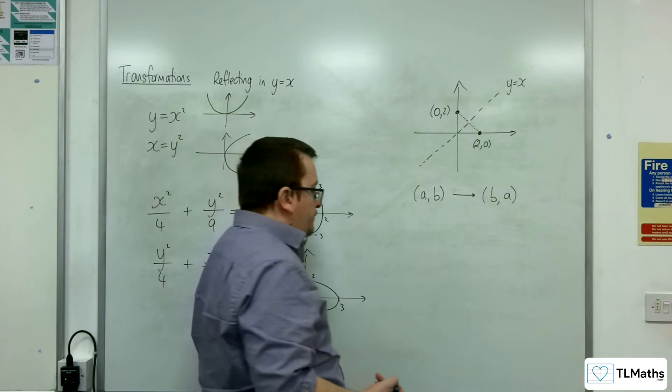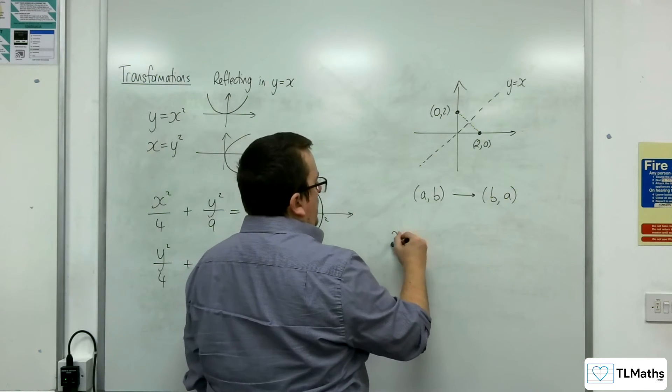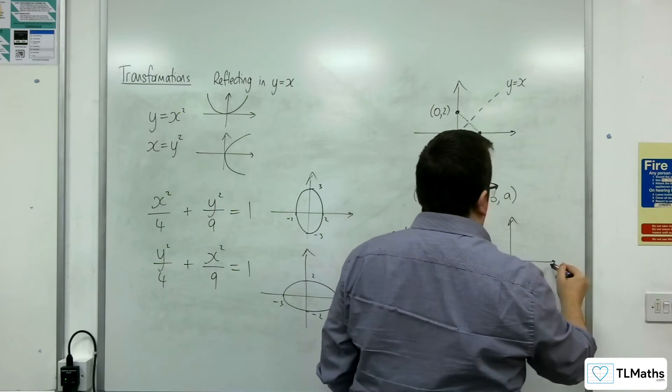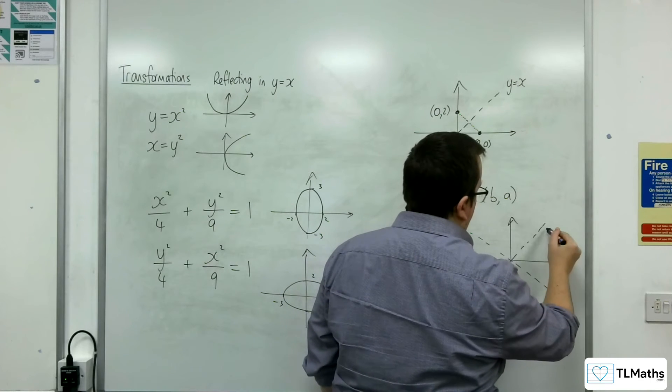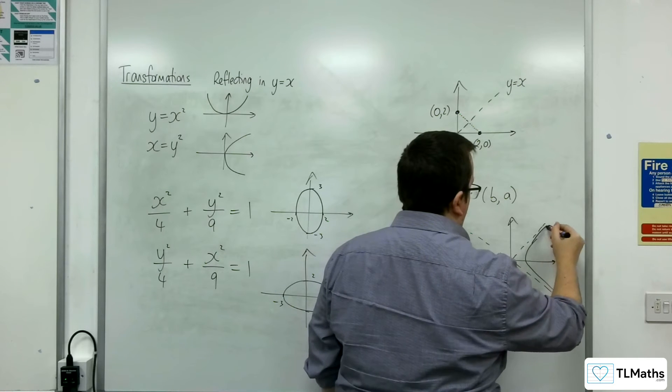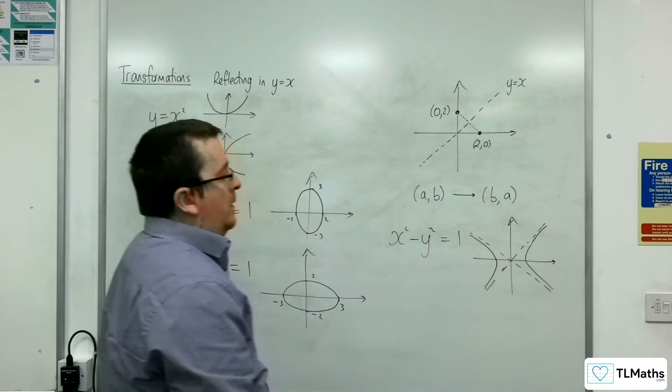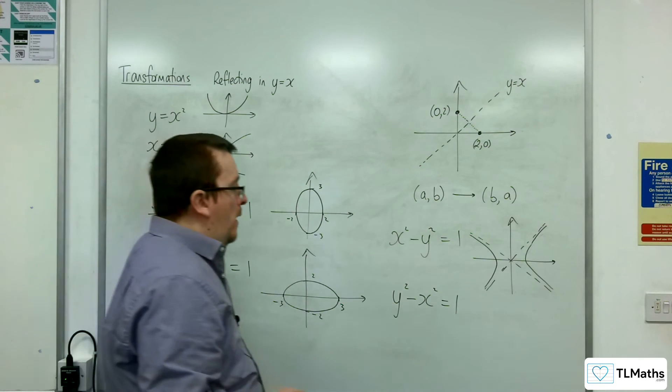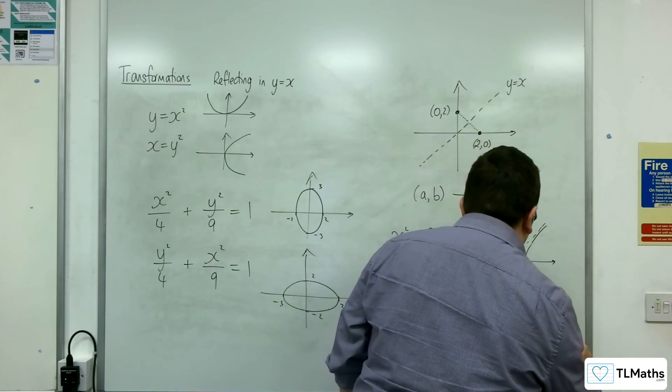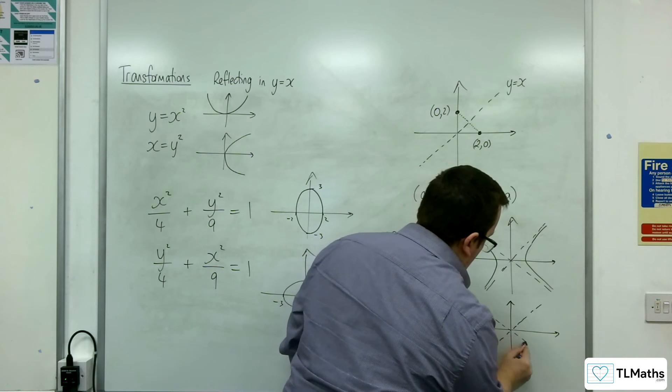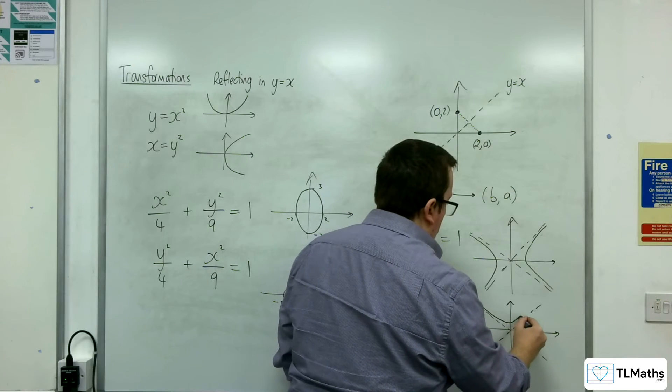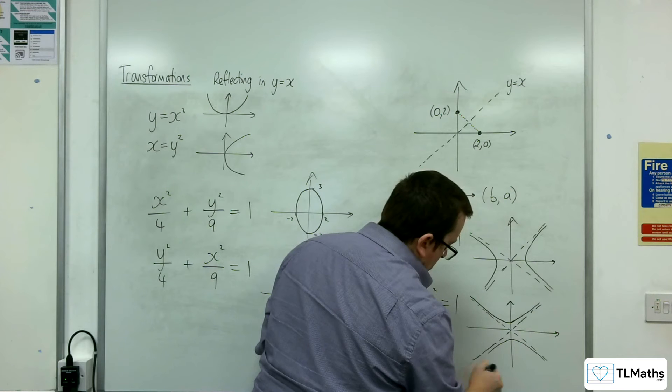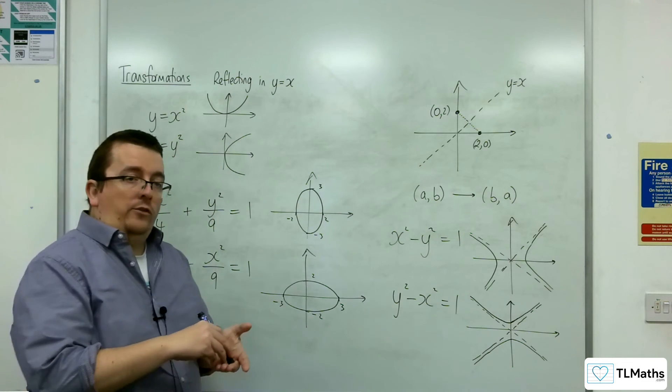For the hyperbola, your general form of a hyperbola is x squared take away y squared equals 1, looking like this. Once reflected, you're looking at y squared take away x squared equals 1. We'll have the asymptotes doing this instead, and so it'll be the other way up when it's reflected.